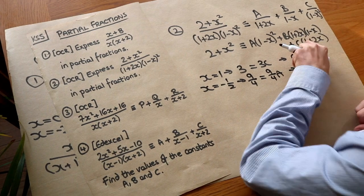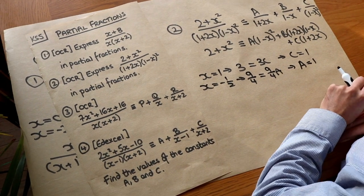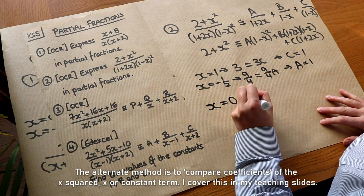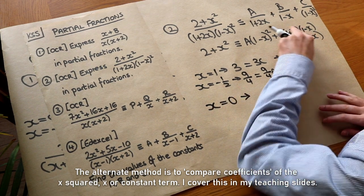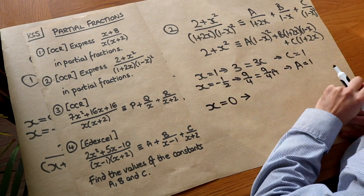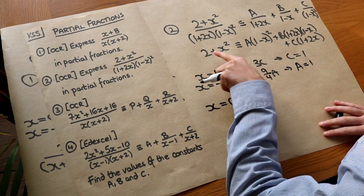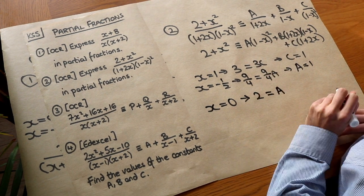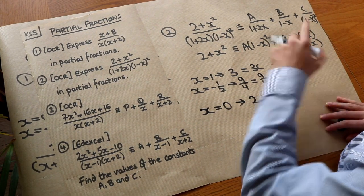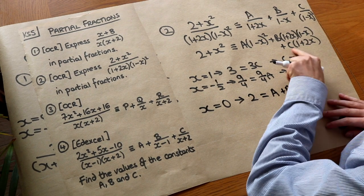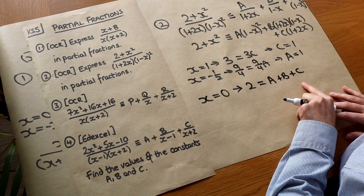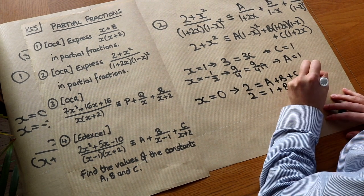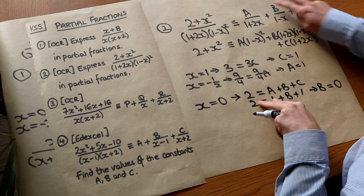At this point we've run out of values to sub in to zero out a term. So let's just use x=0 since that makes the substitution easiest. It won't zero out all the terms, but it doesn't matter because we've already found A and C. Substituting x=0: left-hand side is 2+0 = 2. Right-hand side gives A(1)(1) + B(1)(1) + C(1) = A + B + C = 2. Since A=1 and C=1, we get 1+B+1 = 2, so B = 0. That term doesn't even appear.